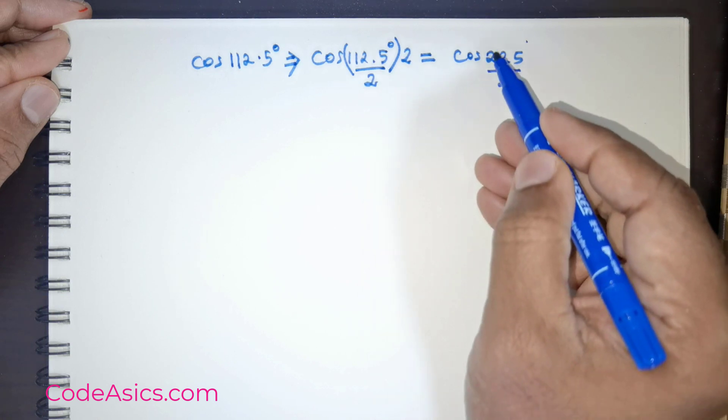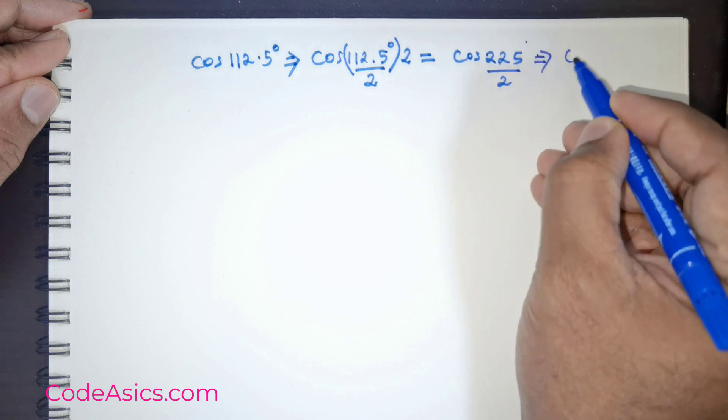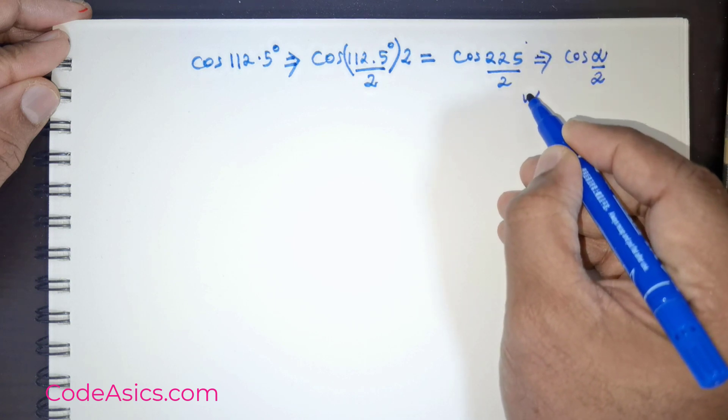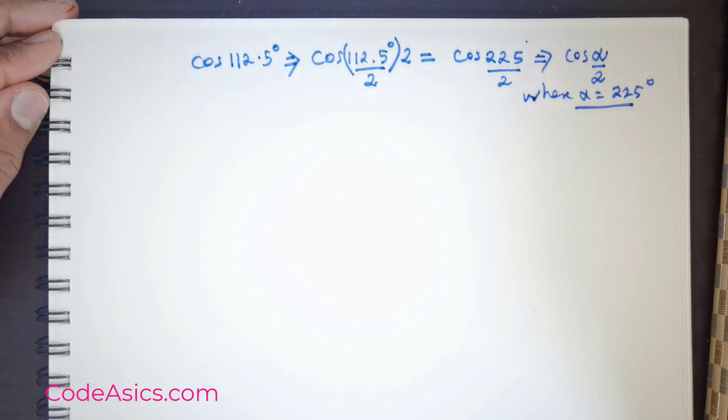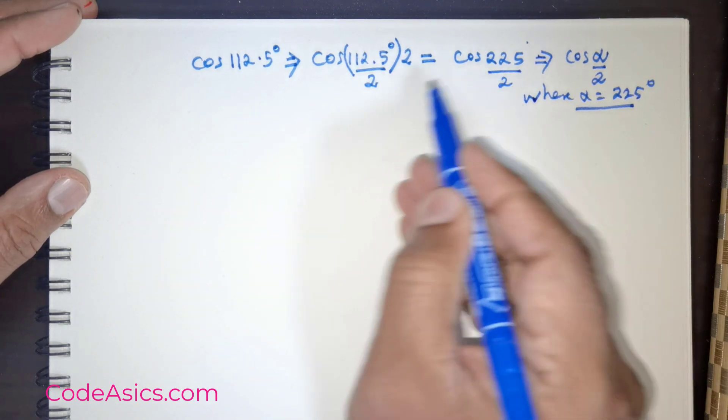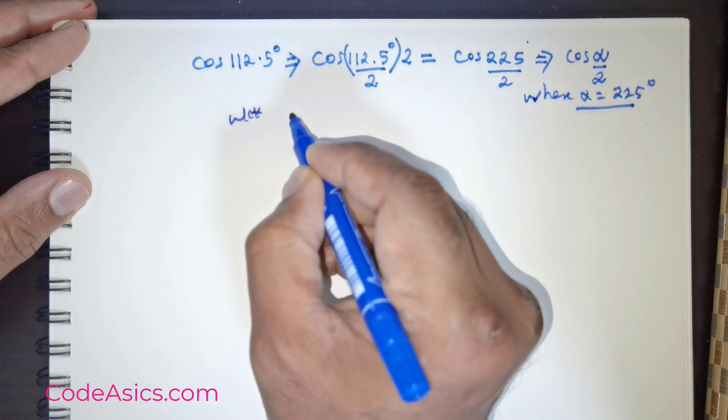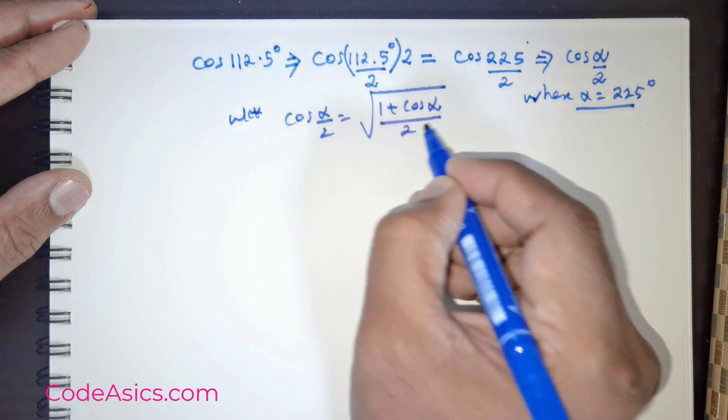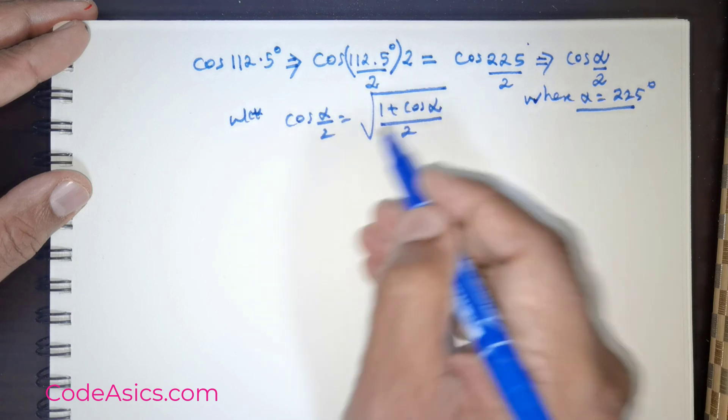We are going to find the value for this. This is likened to the value of cos α/2, where I can state α being equal to 225 degrees. That is the initial adjustment that we have to do. This is going to be our half angle. We know that cos(α/2) equals the square root of 1 plus cos α divided by 2.